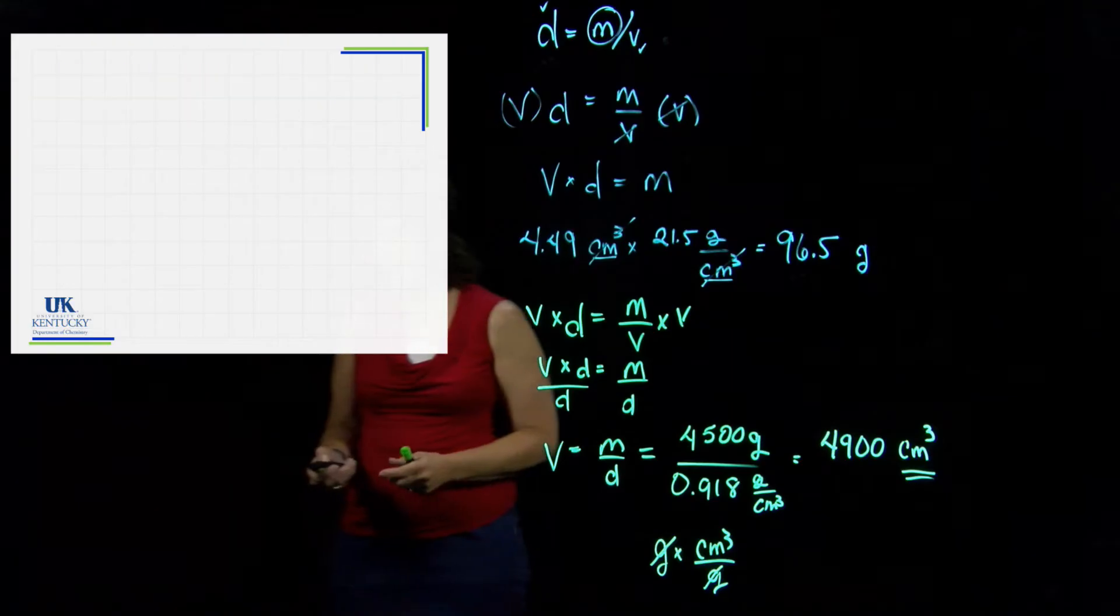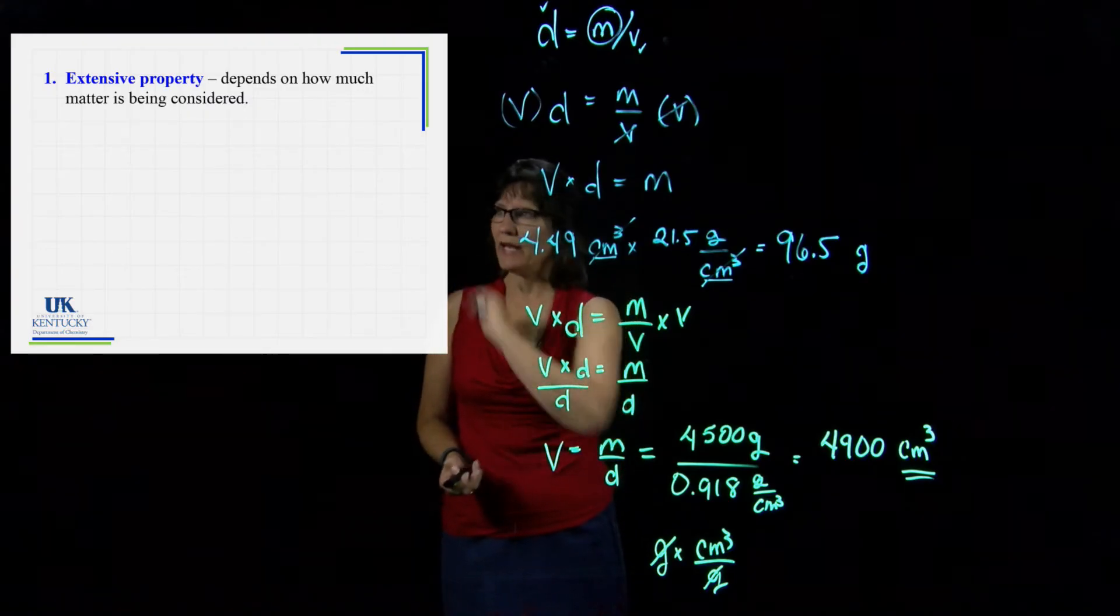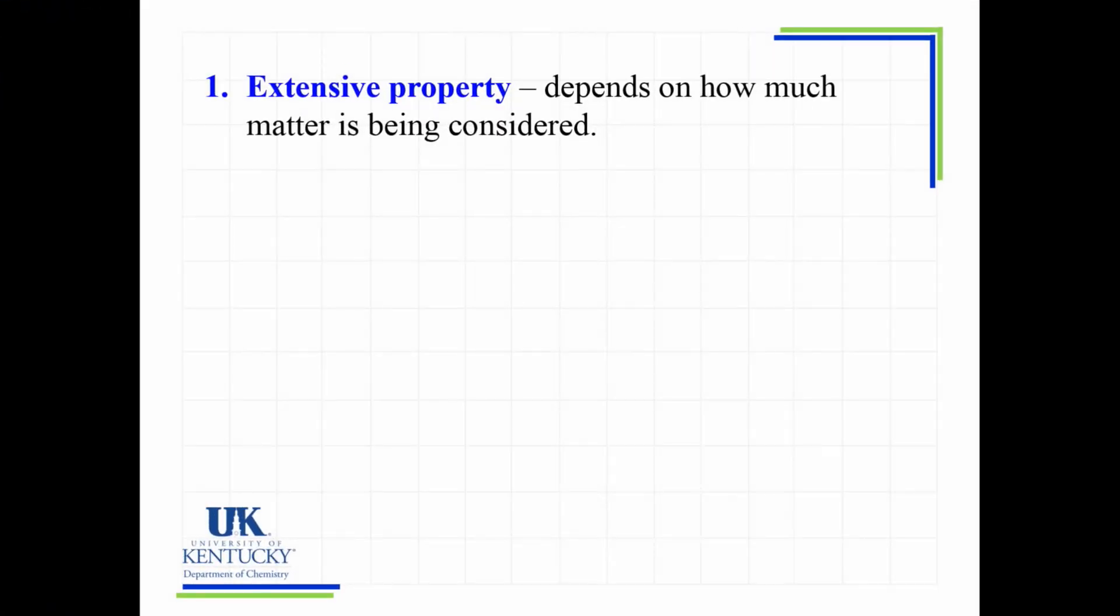We've got ourselves density as a unit. I need to talk about a couple terms called extensive properties and intensive properties. When you make a measurement or observation, some of them will be extensive. That is a property that depends upon how much matter is being considered. If we measured the mass, mass is a measure of the quantity of matter. If there's more, it's going to have more mass. If there's less, it's going to have less mass. That is definitely an extensive property.